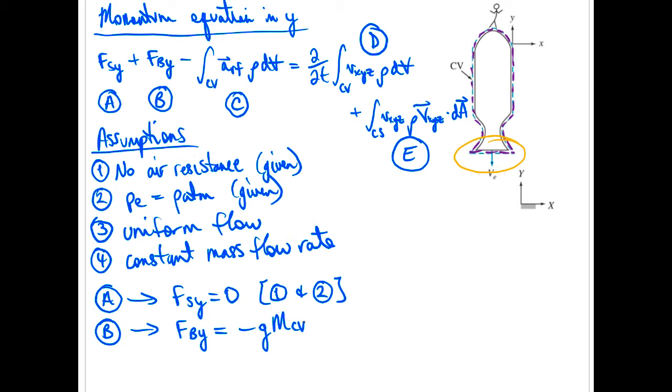Negative, because it's acting downwards, compared to the positive y direction. Capital MCV is denoting total mass of our control volume.